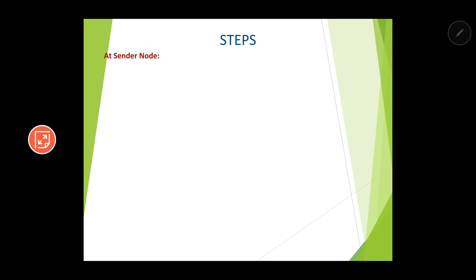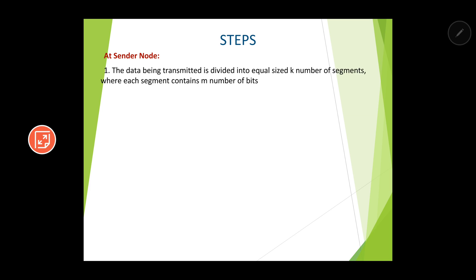Let us go to the steps in which we calculate checksum. You may not understand the steps at first, but after going through the actual calculations, you should come back and it will be more clear. Like other techniques, this process has two parts — some parts happen at the sender node and some at the receiver node. The first step is that the data to be transmitted is divided into equal-sized k number of segments, where each segment contains m number of bits.